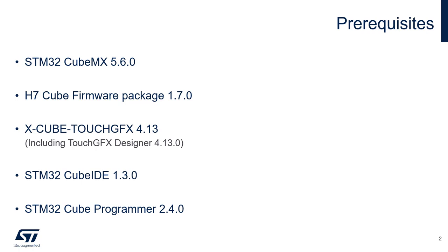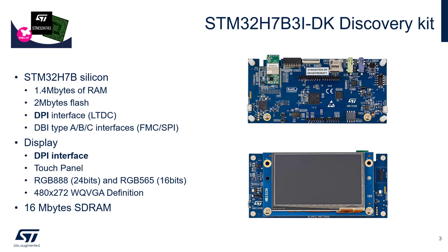The Discovery Kit we will work with during this lab is the STM32H7B3I Discovery Kit. The main interest of this board is its large amount of RAM — 1.4 megabytes of internal RAM and 16 megabytes of external SDRAM. The connection to the display is through a DPI interface using the LCDC component. It has a touch panel, supports both RGB 888 and RGB 565 (24-bit or 16-bit color), and the screen resolution is 480 by 272.